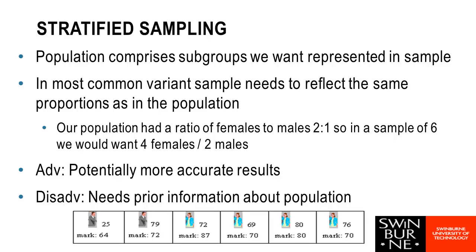A really nice thing about stratified sampling is that it can definitely improve the accuracy of results by ensuring that groups — whether defined by gender, age, or other characteristics — are properly reflected in the sample. One challenge is that we need some prior information about the population. If we don't know the ratio of males to females in the population, we can't stratify by gender.